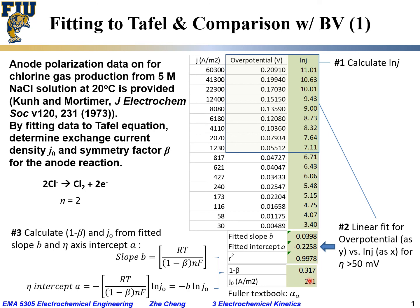And in the textbook by Dr. Thomas Fuller, you will notice for this example, he was using alpha A. And in his definition, alpha A would be the anode transfer coefficient. And essentially, alpha A would be just equal to 1 minus symmetry factor beta times N. And if we have the 1 minus beta is 0.312, and N is 2, we can calculate alpha A would be 0.635, which matches the example data in the textbook.